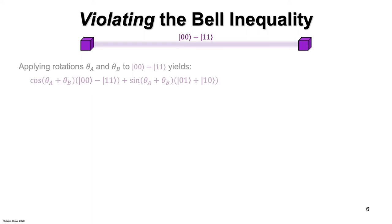Suppose that two qubits are entangled in a Bell state. Consider what happens if a rotation is performed on each qubit. It's a fairly straightforward exercise to check that the result is this state.